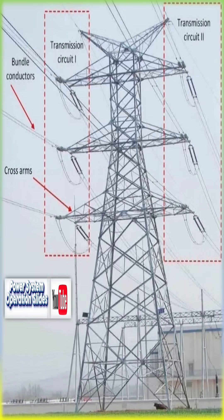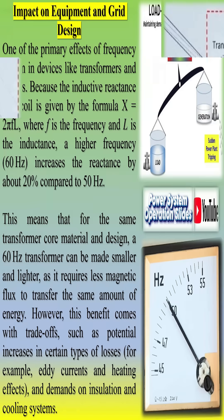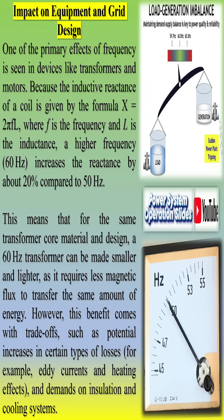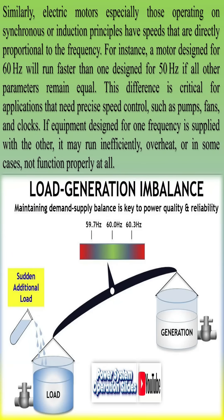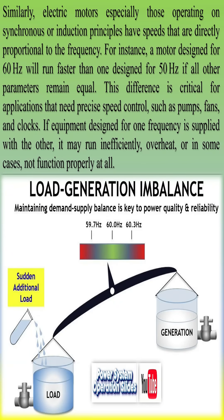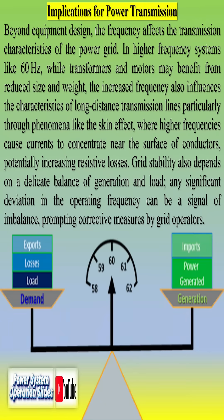Power lines are also affected by frequency variations. Higher inductive reactance X causes greater voltage drops along transmission lines, reducing transmission efficiency over long distances. As frequency increases, current tends to flow more on the surface of conductors — the skin effect — reducing the effective cross-sectional area for current flow, resulting in higher resistance in conductors and increased power losses in transmission lines at 60 Hz compared to 50 Hz.